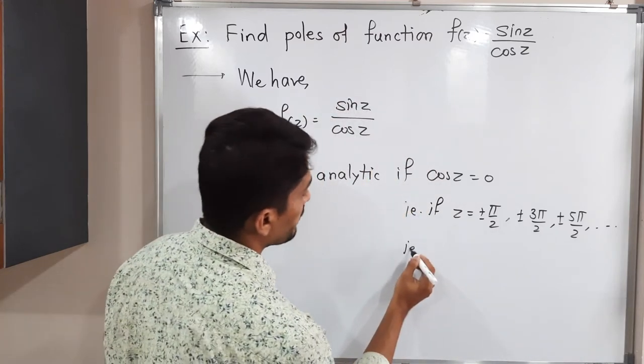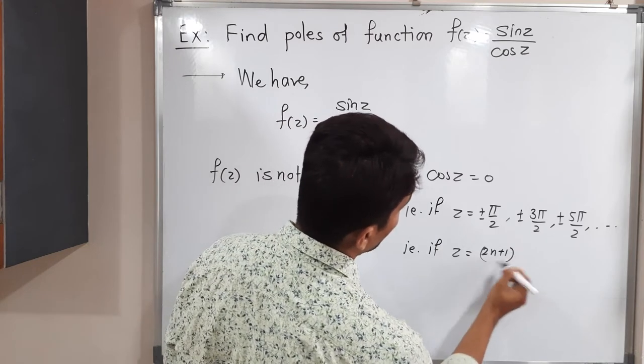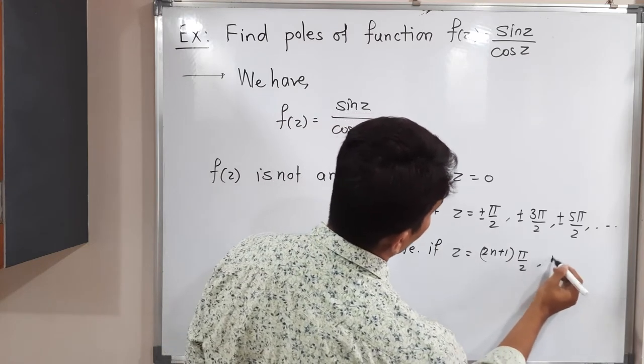I will try to express this in a simple way. z equals (2n+1)π/2, where n is an integer.